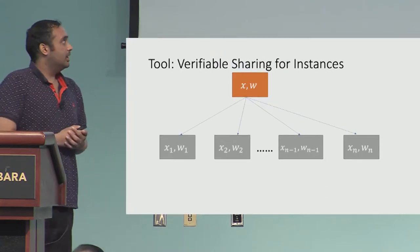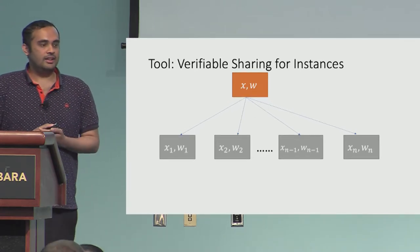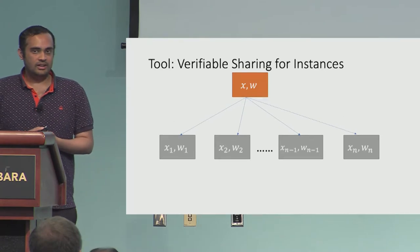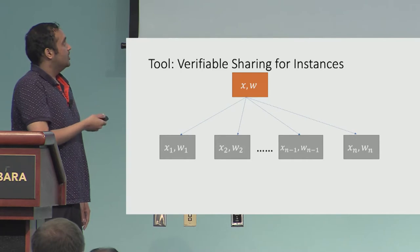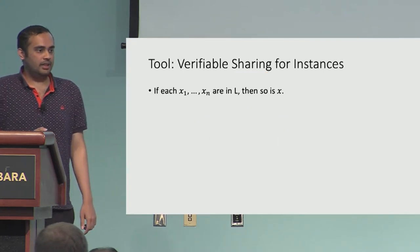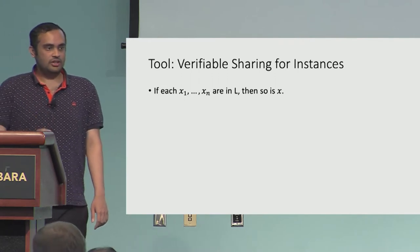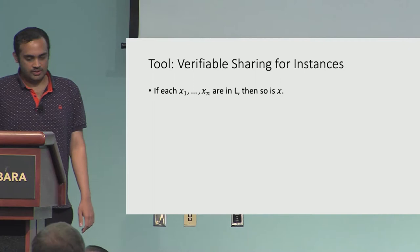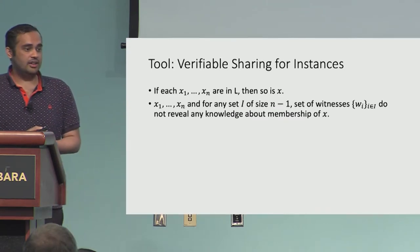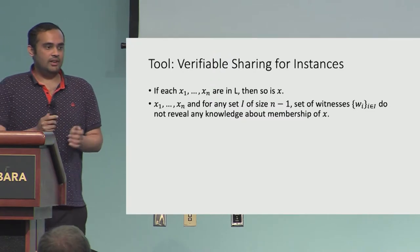We need new technology to handle this issue. We define something called verifiable sharing for instances. The goal is: given an NP instance and a witness, you secret share it into instance-witness pairs, getting shares (X1, W1) through (XN, WN). Two security properties must be satisfied. First, if X1 through XN are an adversarial sharing of X and they happen to be in the language, then X should also be in the language. Second, if X1 through XN were honestly generated shares and we leak N minus one witnesses, those witnesses should not leak any information about the membership of X.